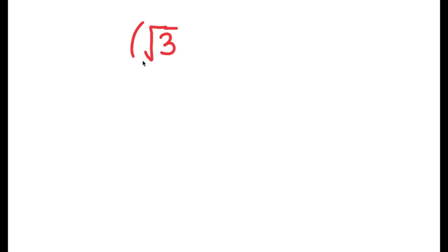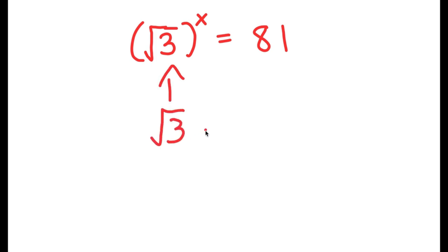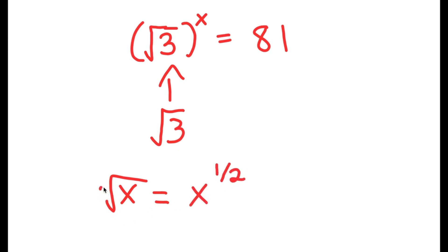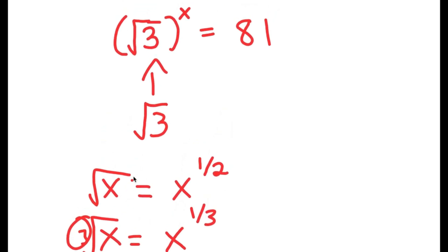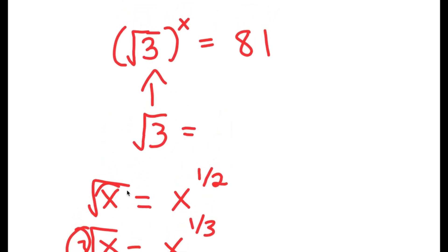In this problem, we have the square root of 3 to the power of x is equal to 81. To solve this, I'm going to focus on the square root of 3. The square root of a number x is the same as x to the power of 1 half, because the root here is 2. Similarly, the cube root is that number to the power of 1 over 3. So the square root of 3 can be rewritten as 3 to the power of 1 half.